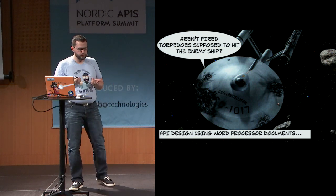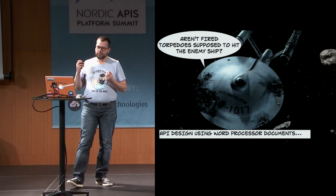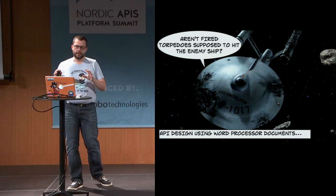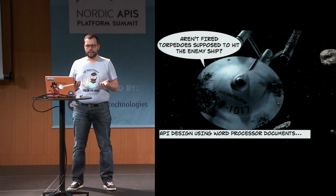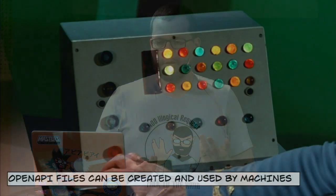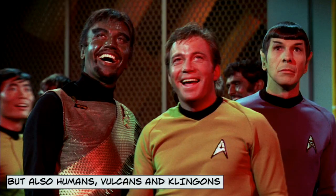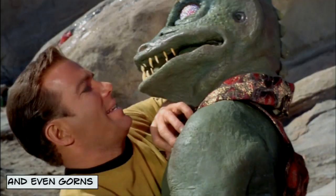Such tools usually don't allow deep control of document content because it's not machine-readable, and it can only lead to inconsistent, incomplete, and unusable APIs. An Open API specification file is a structured file describing an API. This file can be created by machines, programs, but also humans — Vulcans, Klingons, and even Gauls.